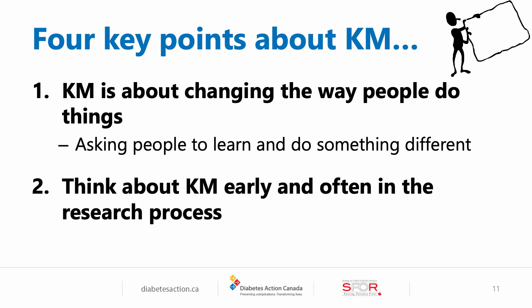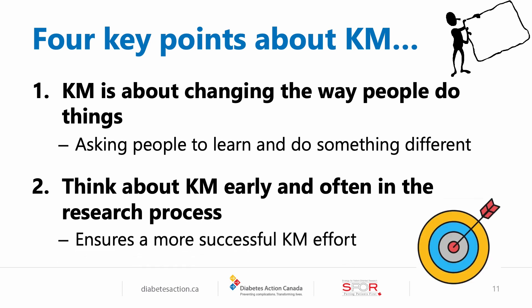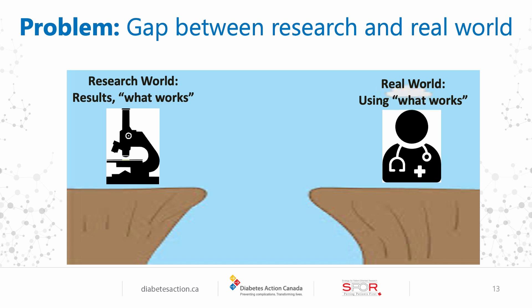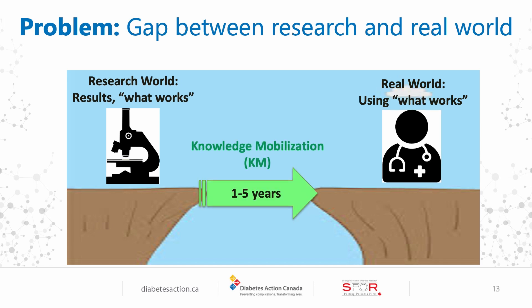Two: it is important to think about knowledge mobilization early in the research process and to think about it often throughout the research process. This will ensure a more successful knowledge mobilization effort and it can help to fix those problems I mentioned at the beginning of this video. For example, if we think about knowledge mobilization early and often throughout the research process, we can decrease the average time it takes to get research results used from 17 years to between one and five years.